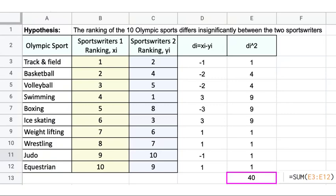Hypothesis using Spearman rank correlation coefficient. For example, the hypothesis is the ranking of the 10 Olympic sports differs significantly between the two sport writers.